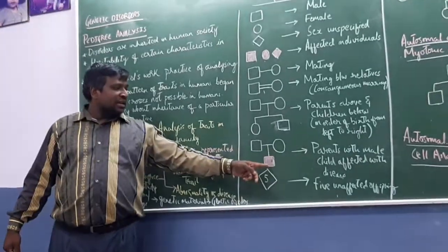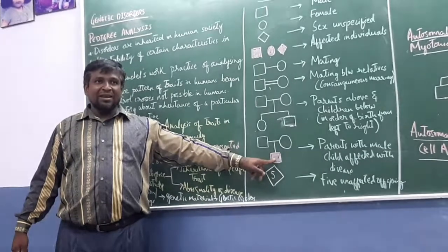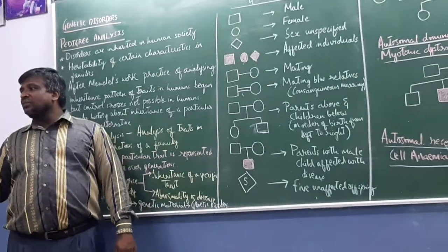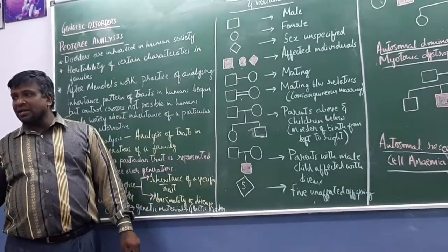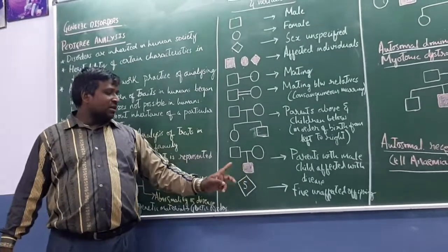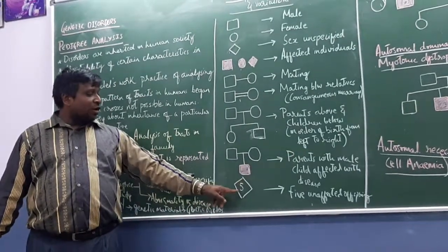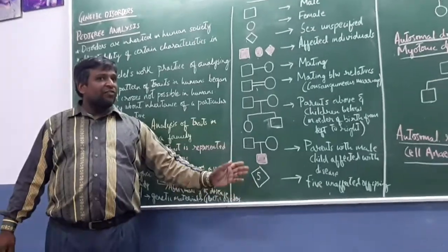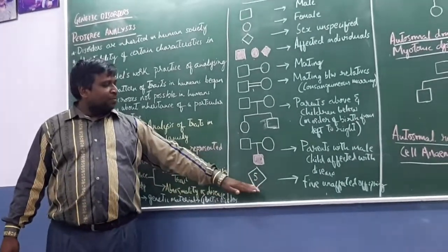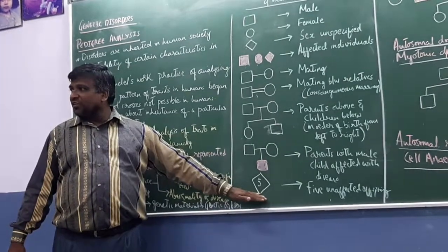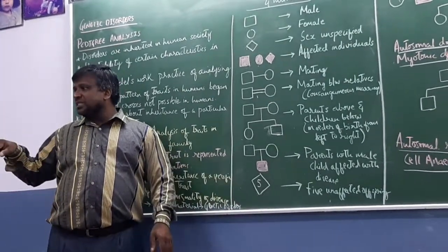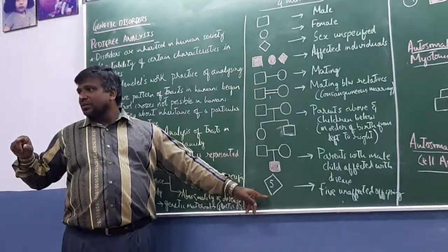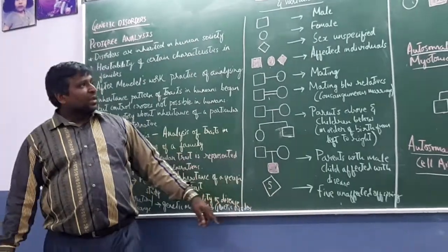Parents have given birth to offspring, male, and it is in pink color. That is, the child is affected with disorder. What does that pink color indicate? Child is affected with disorder or disease. Here, the number five indicates five unaffected offspring. Five unaffected offspring. Instead of drawing it five times in the tree, we can write five in that.